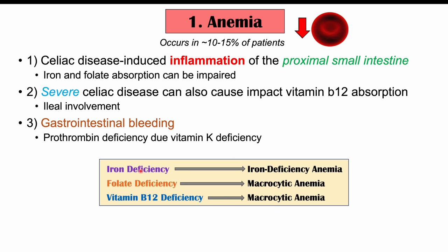Iron deficiency can occur from inflammation of the proximal small intestine, but also from gastrointestinal bleeding — often occult bleeding, hidden from the patient, with small amounts of blood in the stool. Over time, this leads to iron deficiency anemia, since iron is required for hemoglobin synthesis. Folate deficiency leads to macrocytic anemia, where red blood cells are larger but fewer in number. Vitamin B12 deficiency in severe cases can also cause macrocytic anemia.